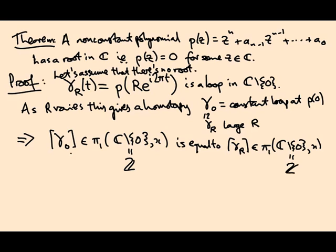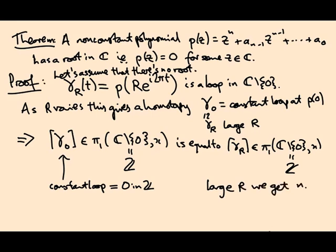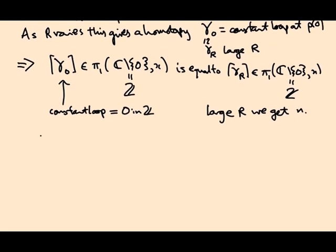Moreover, this is the constant loop. So this is the identity in Z. Zero is the additive identity in the integers. And what I want to prove is that for large r we get n as the homotopy class of gamma r.